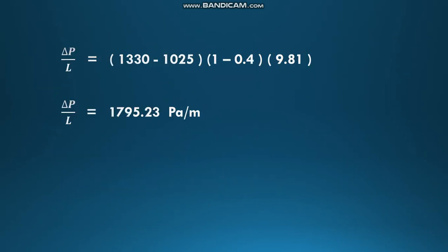Substituting the above terms in this equation: Δp/L = (1330 - 1025) × (1 - 0.4) × 9.81. Calculating this equation we get the answer as 1795.23.